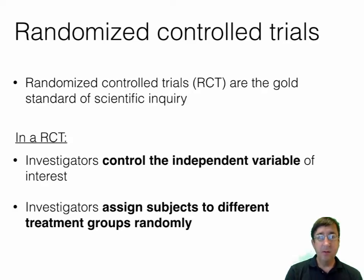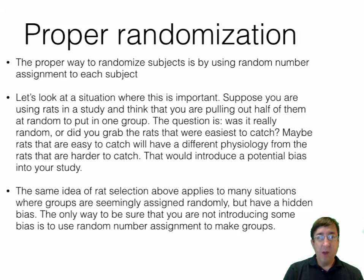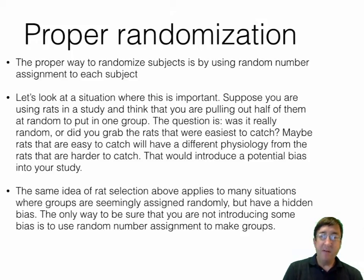The gold standard of study designs is the randomized controlled trial. In a randomized controlled trial, investigators control the independent variable of interest, and assign subjects to different treatment groups randomly. Proper randomization is important. The proper way to randomize subjects is by using random number assignment to each subject.